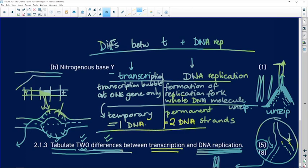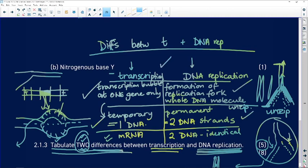Another difference, we're only asked for two, so you should only give two. But another difference is this transcription is going to result in mRNA, this process of DNA replication is going to result in two identical DNA strands. You will get one mark for each correct difference and one mark for your heading and the way in which you've constructed your table. That is how you will get maximum marks for that question.